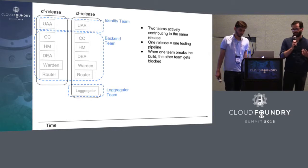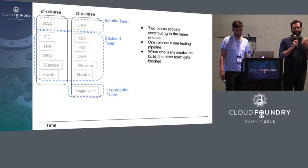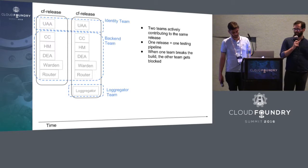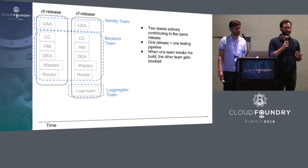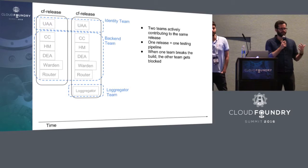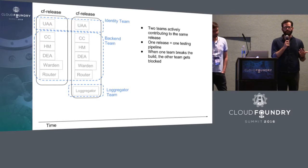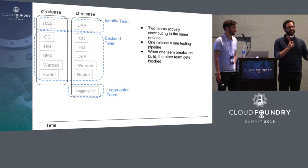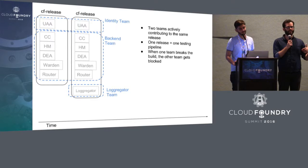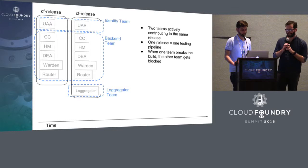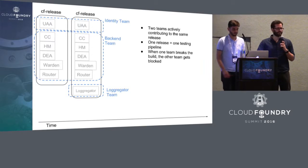With two teams contributing to the same release, each release goes through one testing pipeline. If one team pushed code that would break the build, it would block the other team from contributing code. We halt new commits when a build goes red. This became a huge problem — one team would push code and it might take days for the pipeline to go green again, at which point the other team had stacked up commits waiting to push. They would flood the pipeline, causing another break. The two teams were stepping on each other's toes.